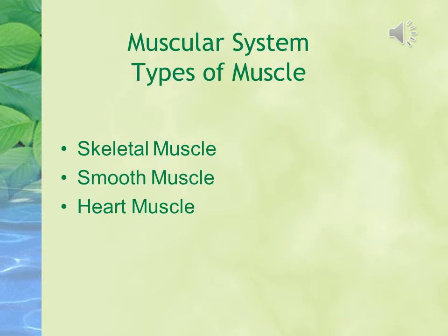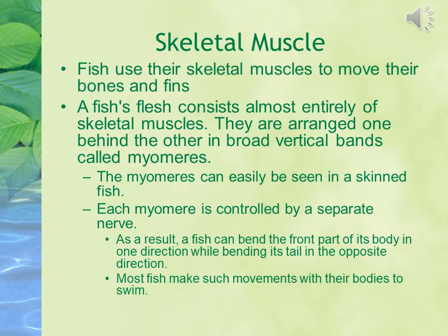The muscular system has three types of muscles: skeletal muscles, smooth muscles, and heart muscles. Fish use their skeletal muscles to move their bones and fins. A fish's flesh consists almost entirely of skeletal muscles. They are arranged one behind the other in broad vertical bands called myomeres. The myomeres can easily be seen in a skinned fish.